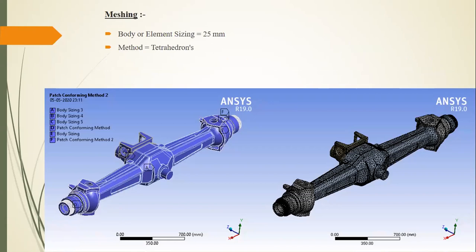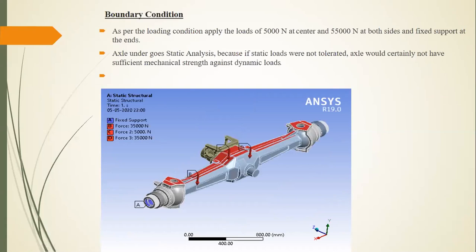Now let us talk about how the meshing was done. The mesh size used is 25 mm, and the method used is tetrahedral meshing for better mesh quality and better mesh refinement. You can see the A, B, C, Z designations where the tetrahedral method is applied, along with the mesh sizes used, achieving better mesh quality and refinement.